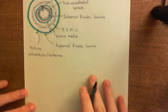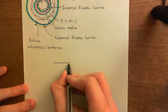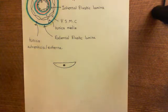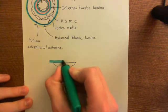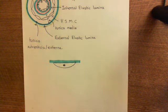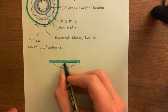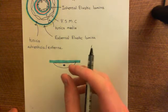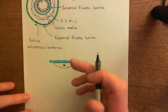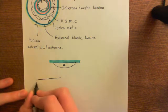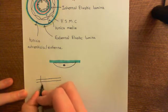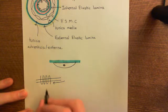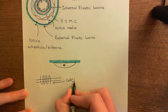Let's draw an endothelial cell sitting on its basement membrane of collagen. These endothelial cells have on their basolateral membrane receptors for histamine — more generally, receptors for inflammatory mediators, of which histamine is an example. These receptors for inflammatory mediators are G-protein coupled receptors, or GPCRs.